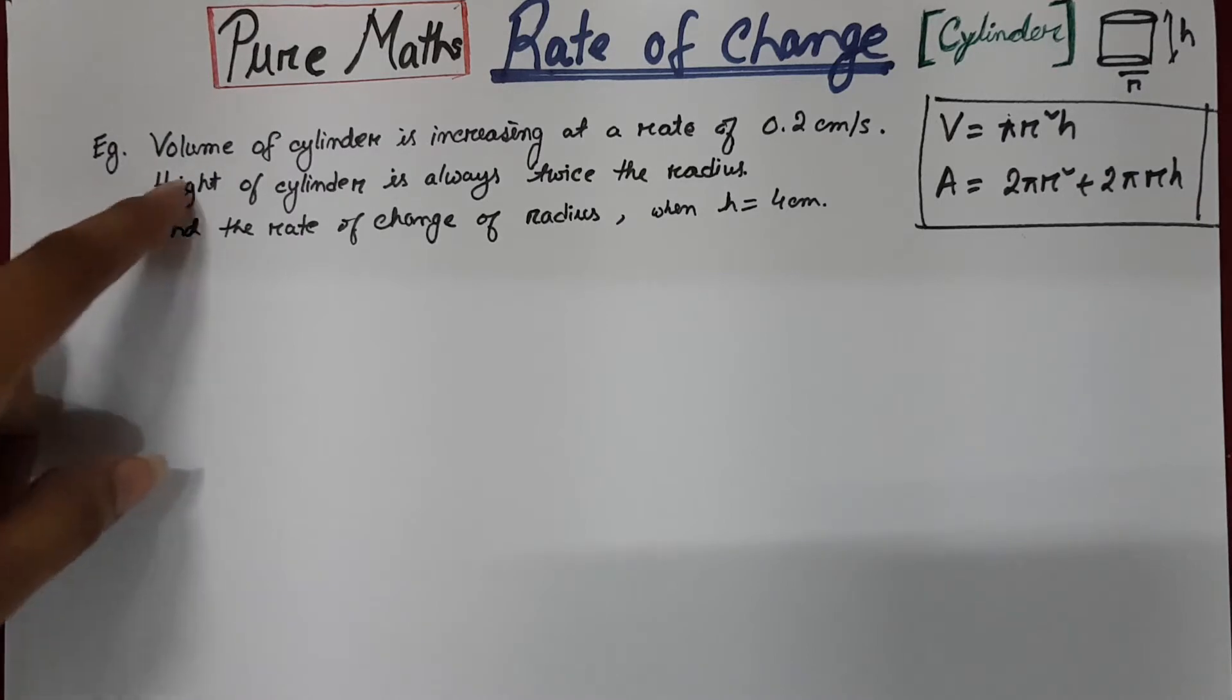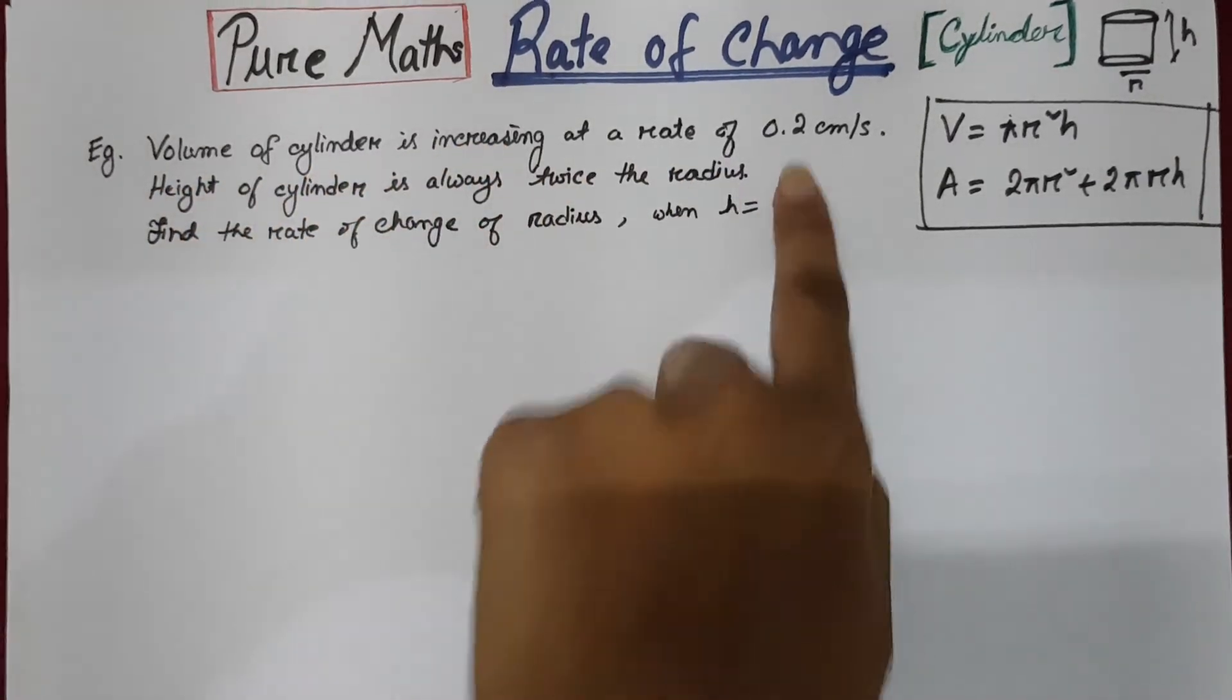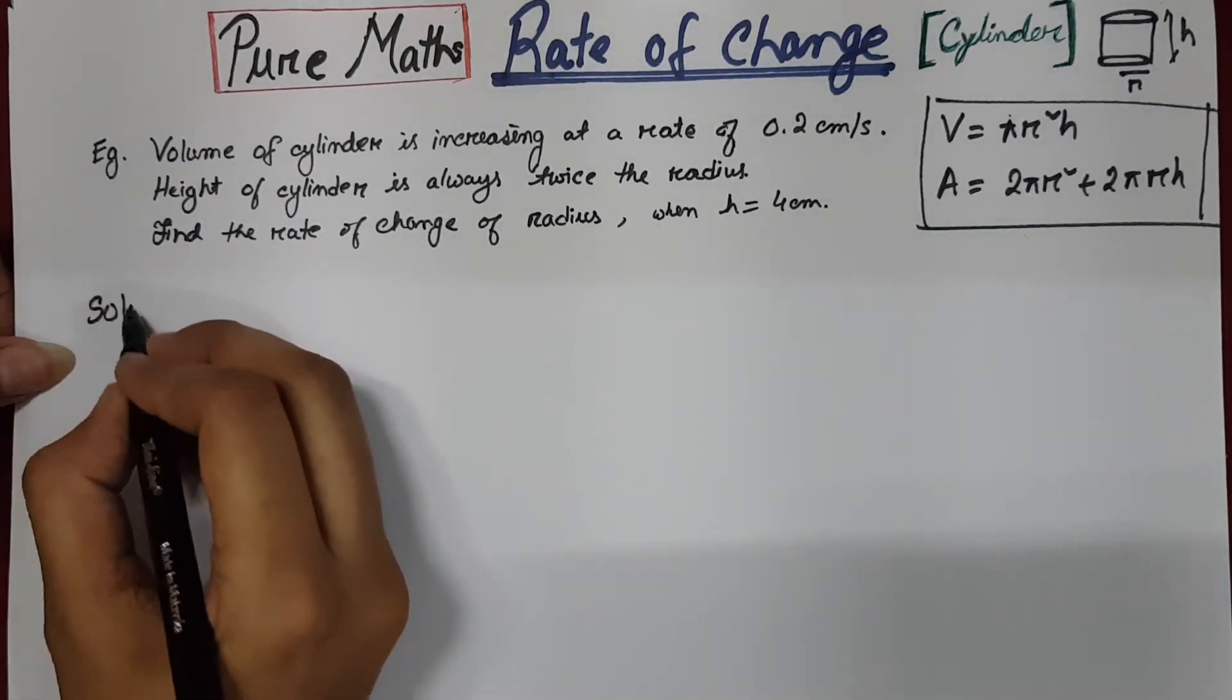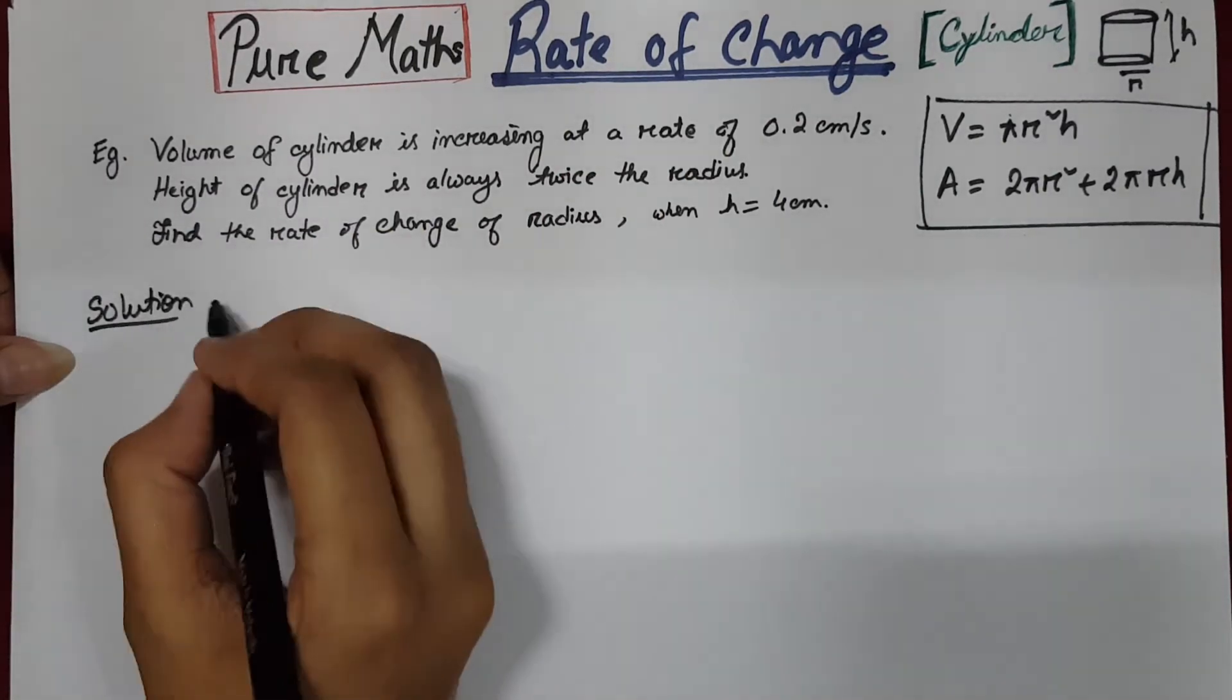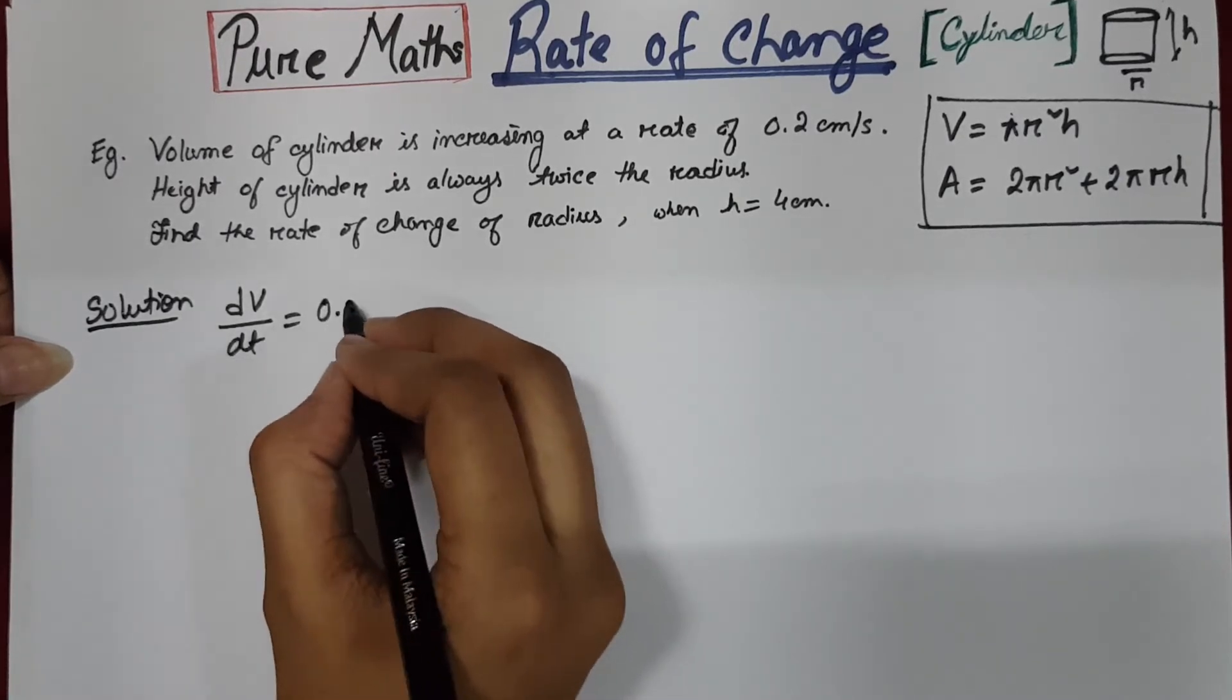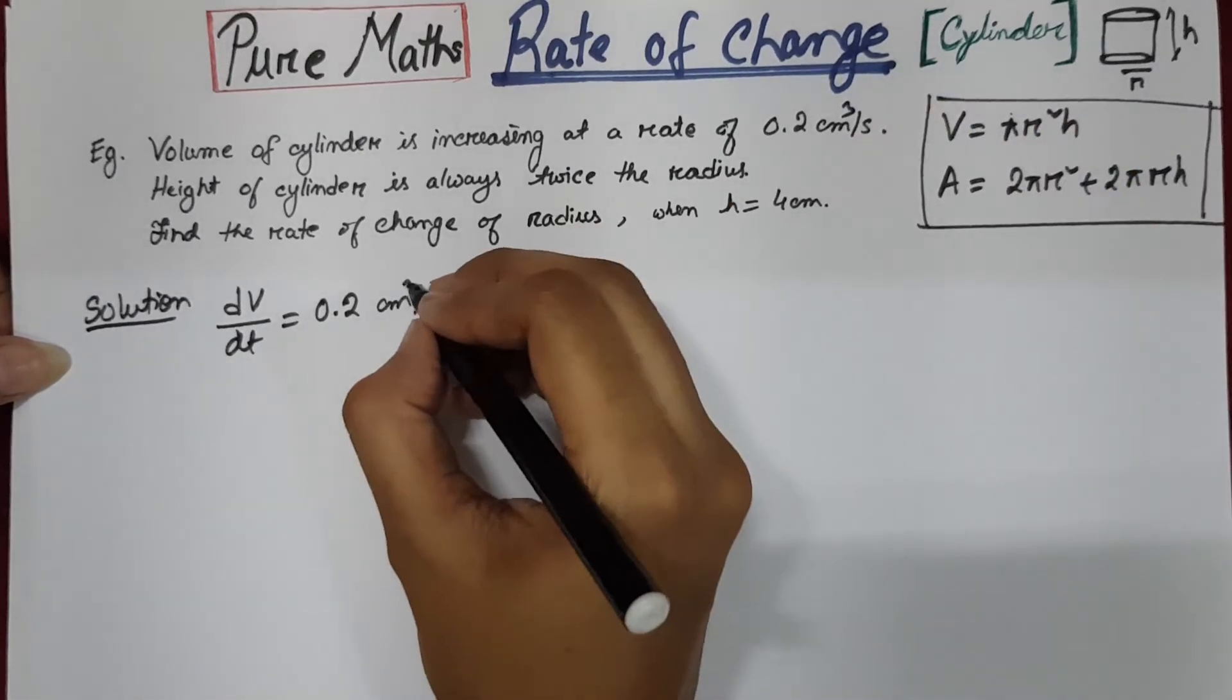So suppose here is an example. You know the volume of the cylinder is increasing at a rate of 0.2 cm per second. That is, we know dv by dt, which is 0.2 cm³ per second.